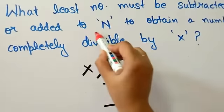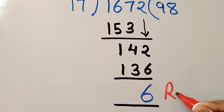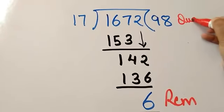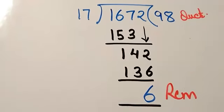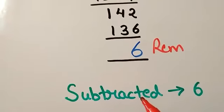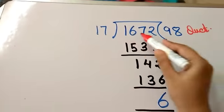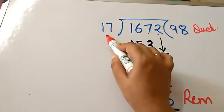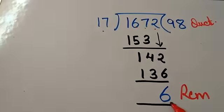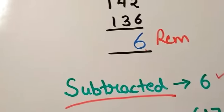So let's follow the trick — divide 1672 by 17. 17 into 9 is 153, you will get 14, carry forward. 17 into 8 is 136 and the remainder you get is 6. Now, according to the trick, when you are asked what least number must be subtracted from 1672 to be completely divisible by 17, your answer will be the remainder.